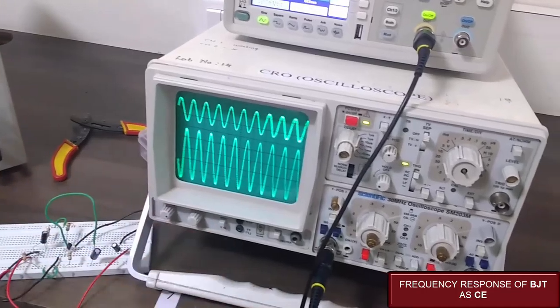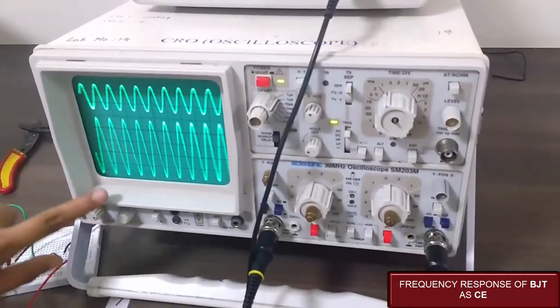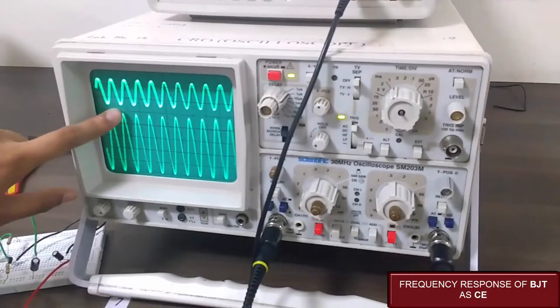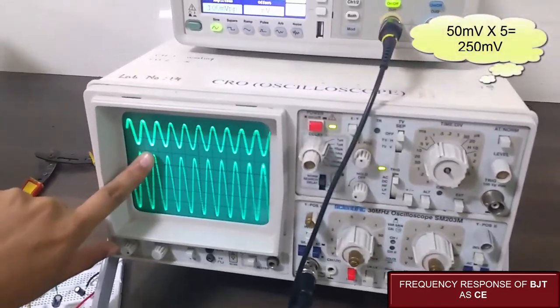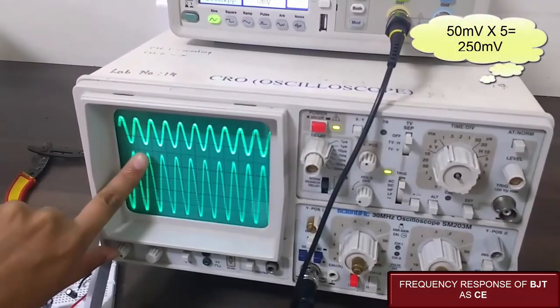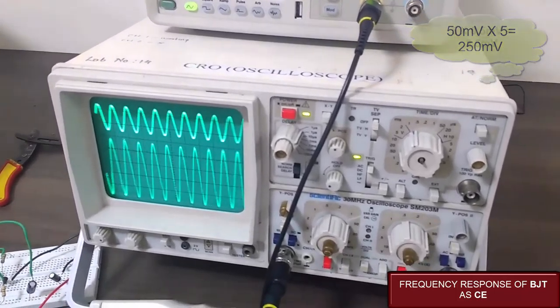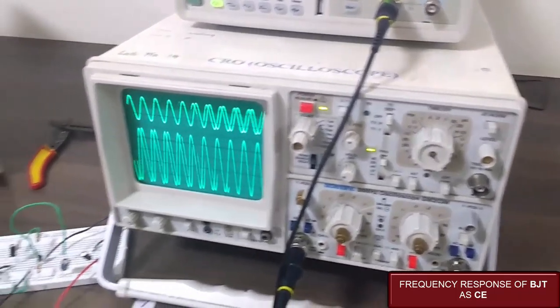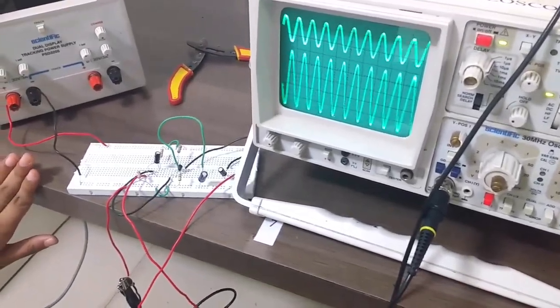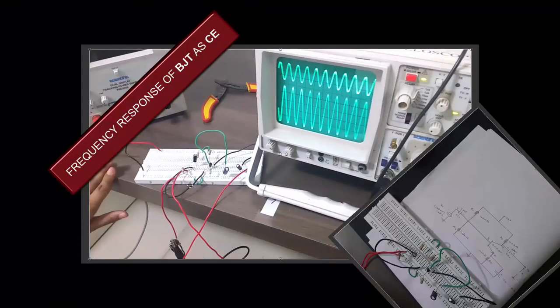As you can see, I have kept it at 0.5 and we are getting 1, 2, 3, 4, 5. That is 5 into 0.5, that is 2.50. We have, it has amplified and this is what this software does. This is how the frequency response is obtained.